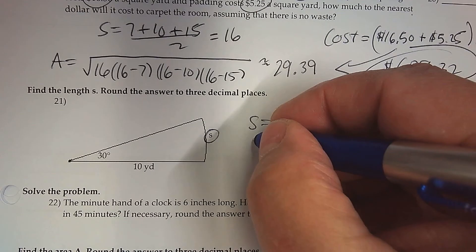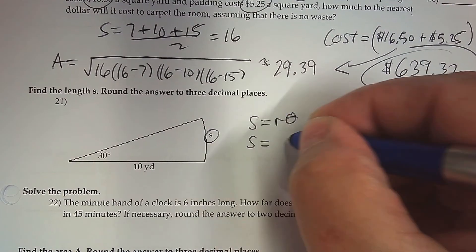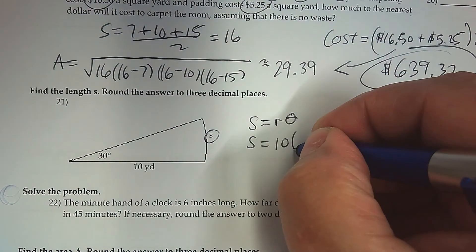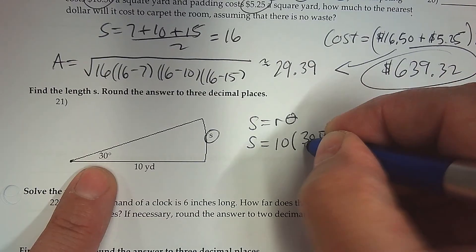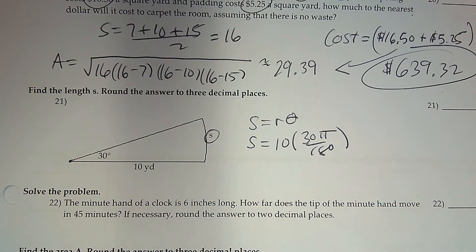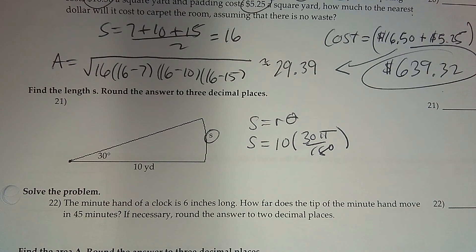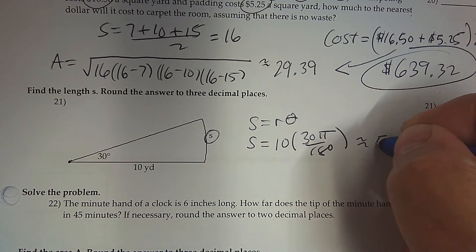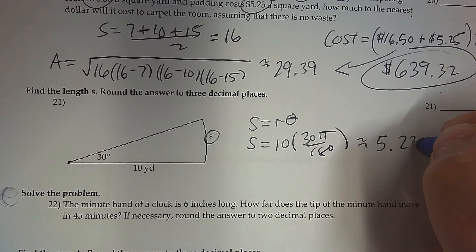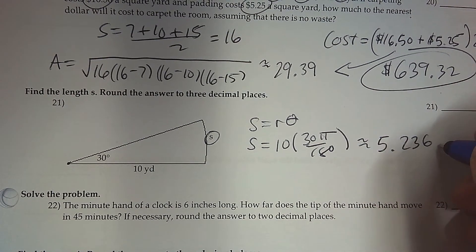So for this arc, the radius is 10, but the angle is 30 degrees. So I have to change it to radians by going pi over 180, and then use my calculator to finish it to three decimal places. The arc length is approximately 5.236, and that's in yards.